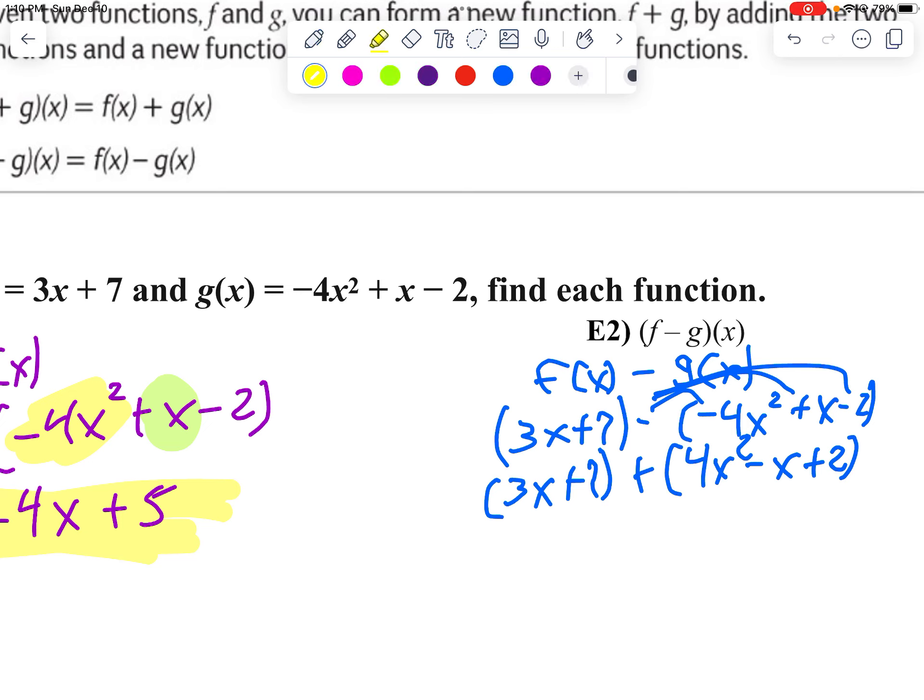And just like before, there's only one term that has a squared in it, and that's 4x squared. So we're going to say 4x squared. Now let me highlight these here first. And there we go. I'm going to go 3x minus x. Well, that'll be positive 2x. Then 7 plus 2 would be 9. And there's our solution to that problem.